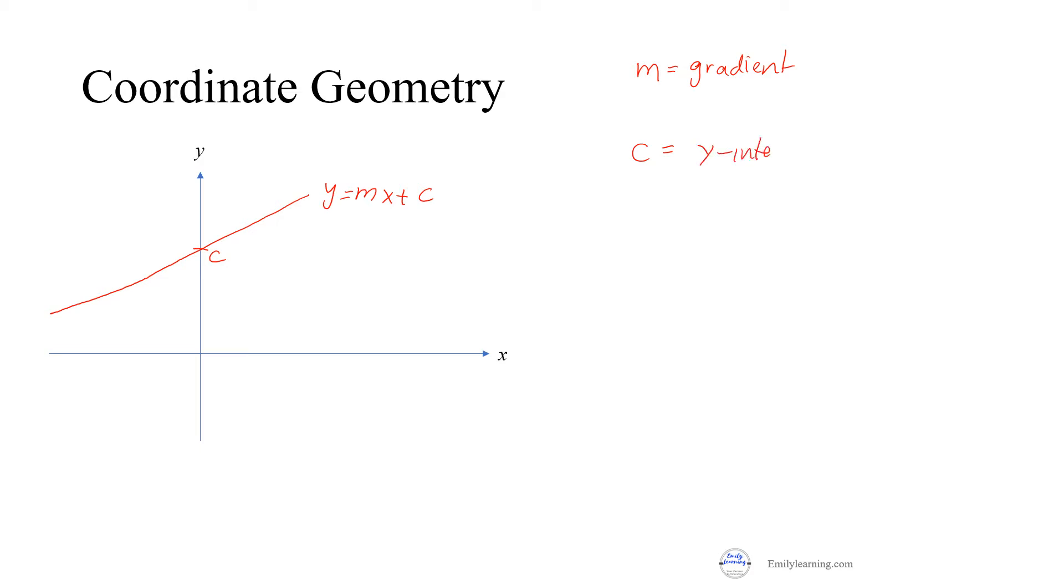We have a formula to find the gradient. If I know two points on the line, one point has coordinates x1, y1 and the other has coordinates x2, y2, then the gradient is given by y2 minus y1 over x2 minus x1. It can also equal y1 minus y2 over x1 minus x2.